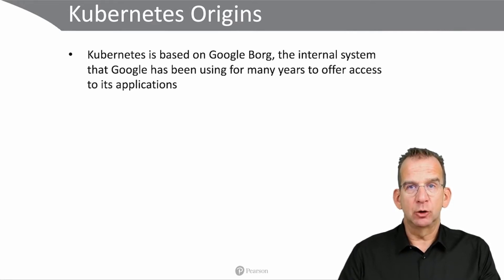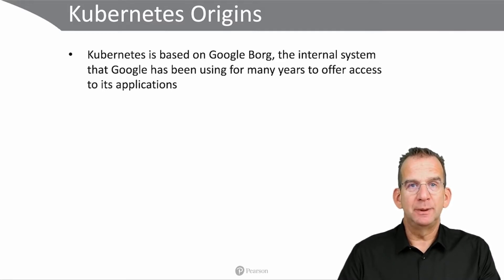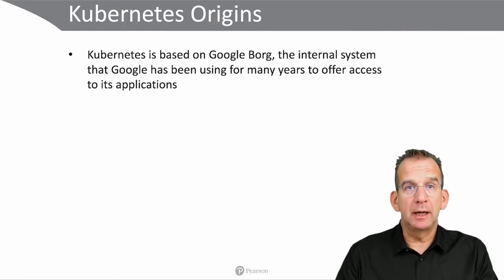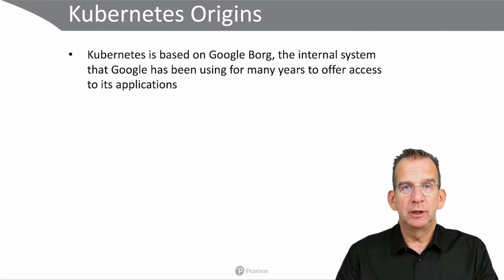Google has had an internal system with the name Google Borg, and that is the Google system that has been used for over a decade to orchestrate the Google container-based applications. And then we are talking about all the applications that Google is offering in their worldwide cloud environment — to make sure that we can use the Google search engine, and Google Docs, and Google Maps, and all that kind of stuff.